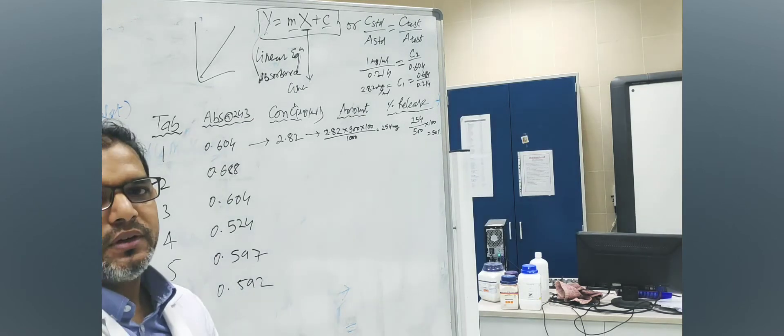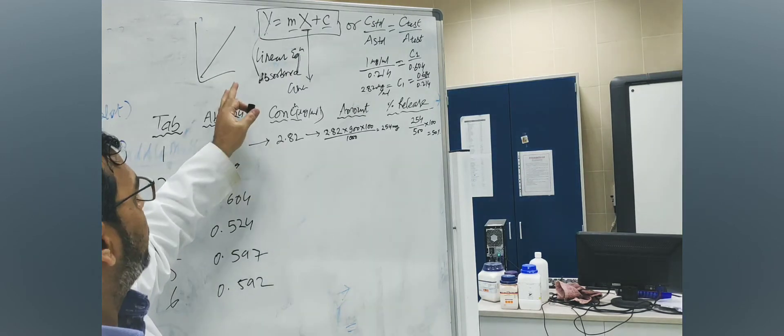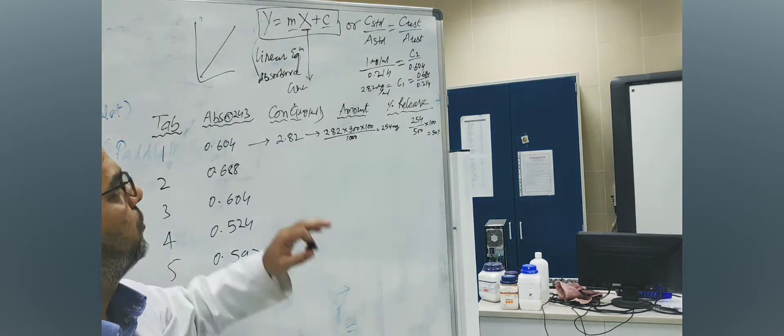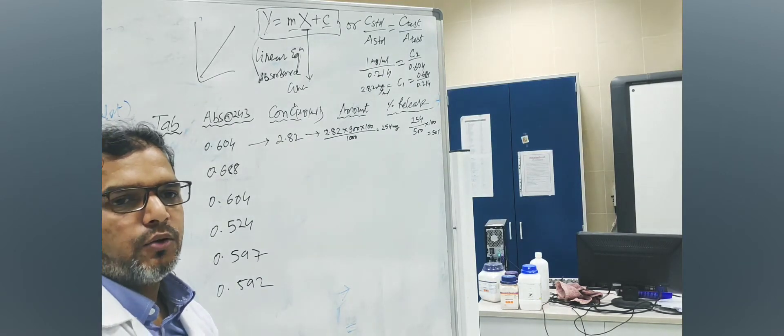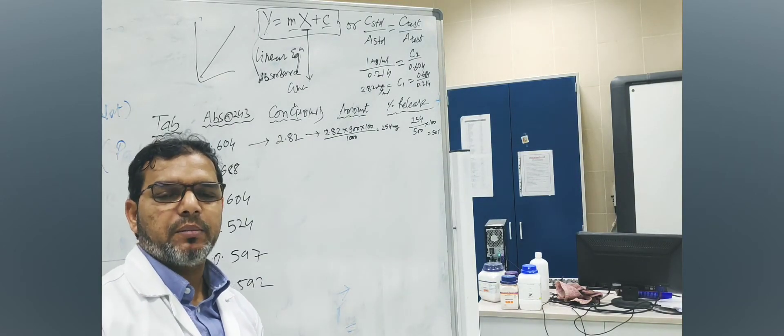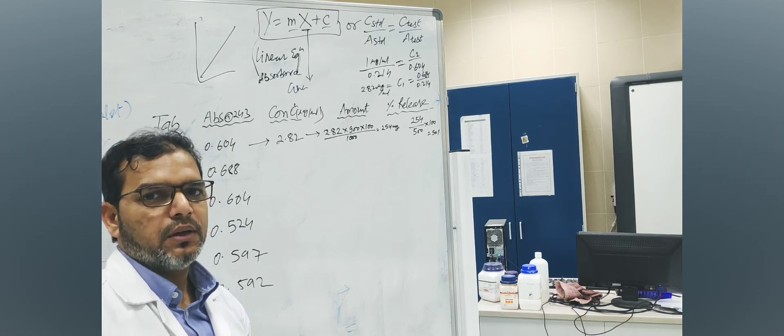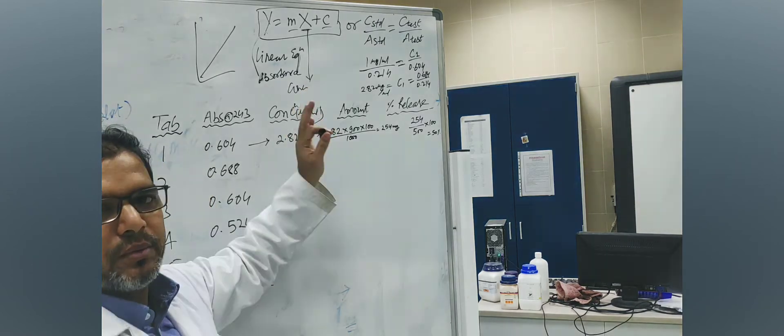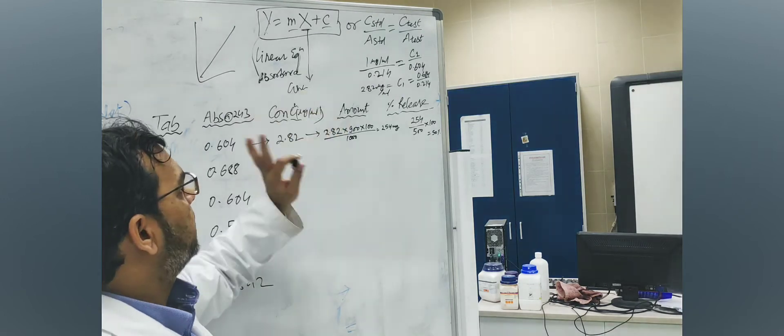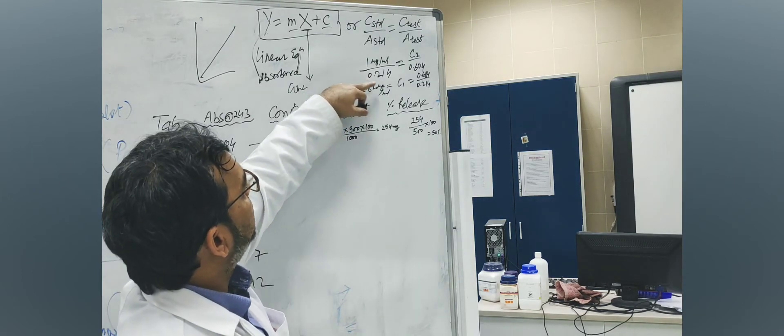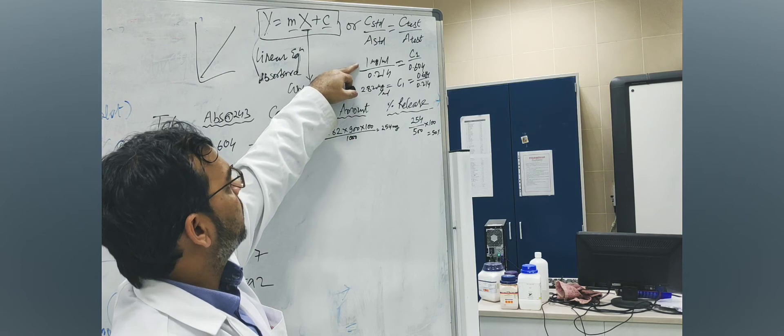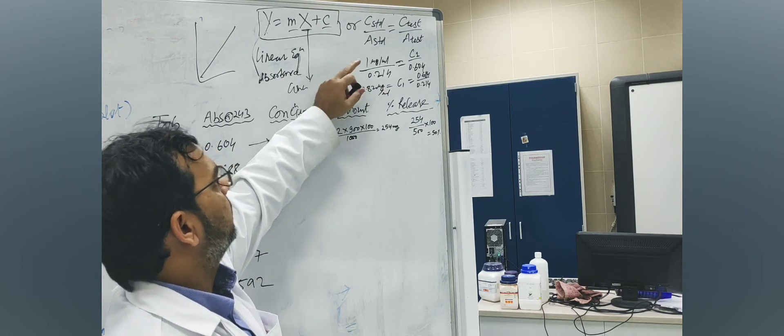In our case, we didn't prepare a calibration plot because it is Glendi method. So we prepared just one standard. The stock solution was 100 ppm and I diluted it 100 times to make it 1 ppm. So the absorbance of 1 ppm standard solution is 0.214, and the concentration is 1 ppm or 1 microgram per mL.